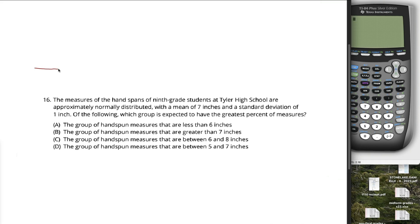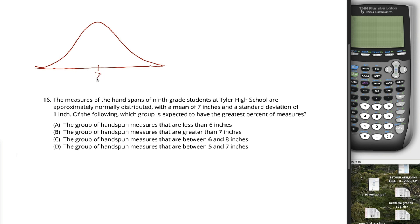When you see approximately normally distributed, you're thinking the bell curve. When we're talking about our normal distribution, there's always two parameters: the mean, which you put in the middle of your picture — in this case the mean is 7 inches — and the standard deviation, 1 inch in this case, which is how much you count up and down by.